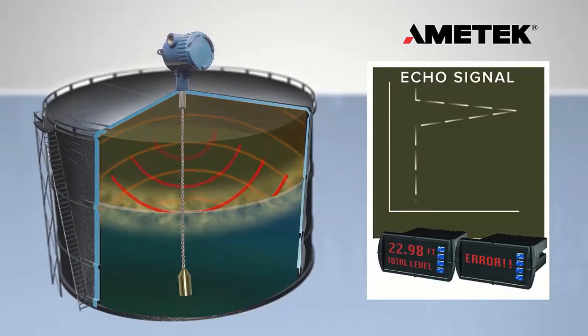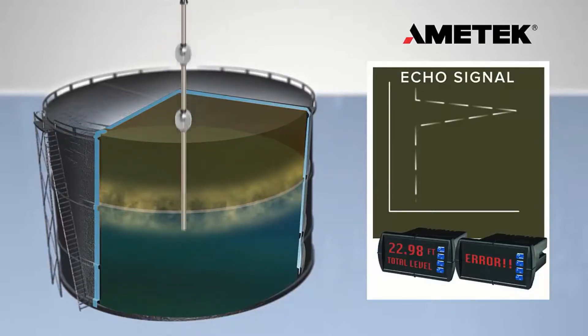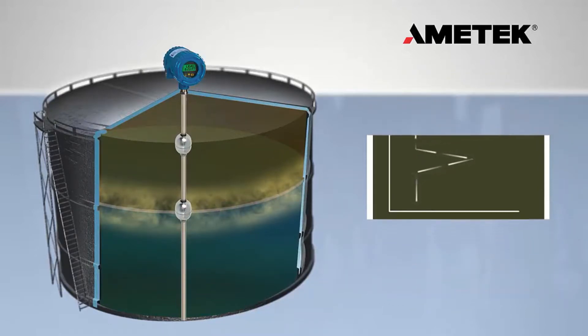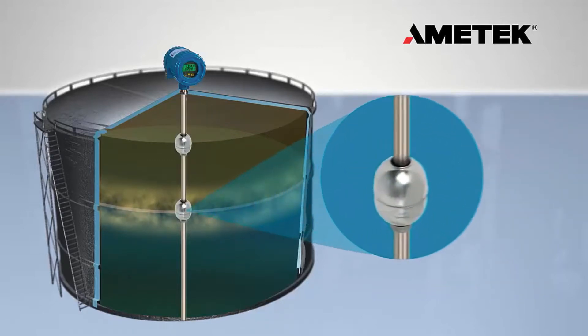If this occurs, it is extremely difficult to maintain control of the process. Using a float-based magnetostrictive technology, the measurement becomes straightforward. Both product and interface return signals are generated by the reflection of a magnetically induced strain on the measurement wire, which is embedded in the probe.